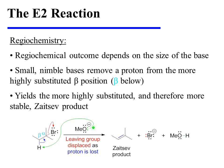For example, in this case, methoxide is a small, nimble alkoxide base. It can remove a proton from this beta position, which yields a tri-substituted alkene product, which is the Zaitsev product in this instance.